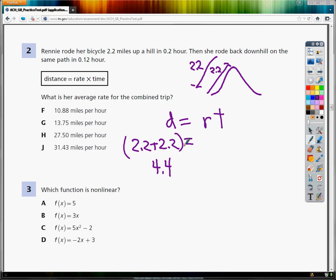Now, for the rate, that's what we're trying to find. So we're not going to fill in anything for R. Now, as far as the time goes, the time that she goes up takes 0.2 hours. On the way back down, it takes 0.12 hours, which it should because that would be less.